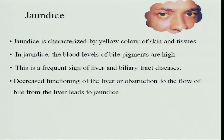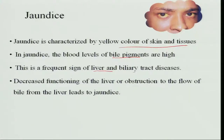What is jaundice? It is characterized by the yellow color of skin and tissues. In jaundice, the blood levels of bile pigments increase, much higher than normal levels. This is a frequent sign of liver and biliary tract disease. Decreased functioning of the liver and obstruction of the flow of bile from the liver leads to jaundice.